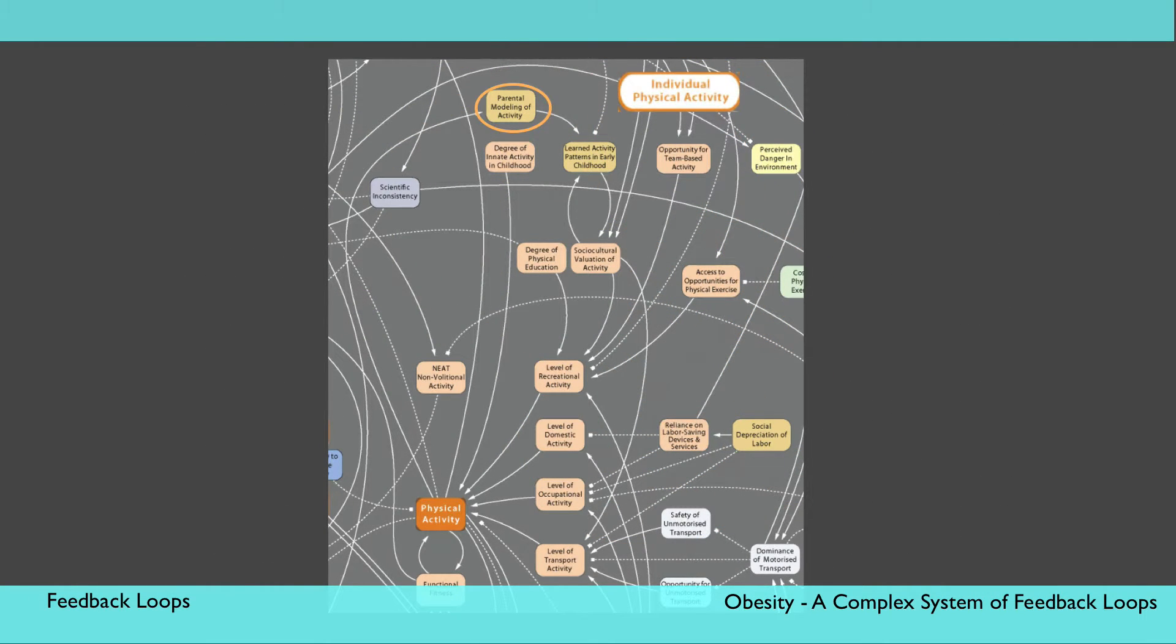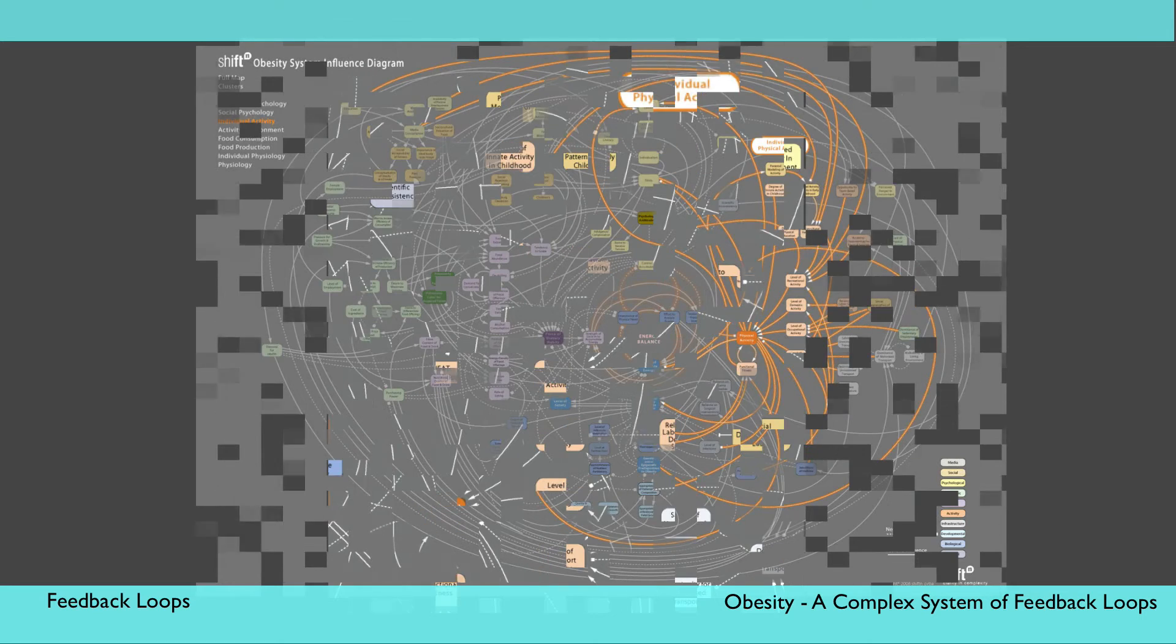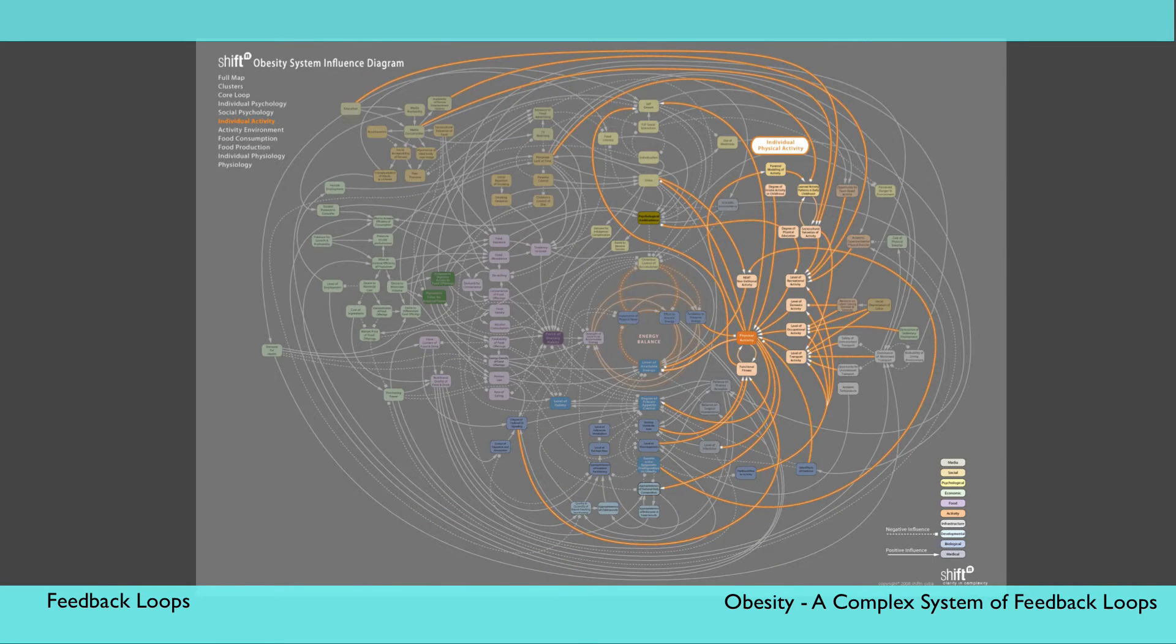As parents increasingly model activity for their children, children learn more activity patterns in early childhood. This increases the value of being active, and the level of recreational activity, increasing the overall physical activity. Increasing overall activity in turn reinforces and increases the parents' modeling activity for their children, thus closing the interaction between all of these elements into a positive or reinforcing feedback loop.